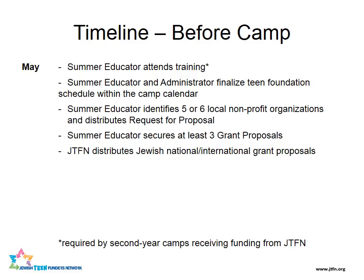After this training, the next big step will be to finalize the teen foundation schedule within the camp calendar. We'll talk more about the best ways to do that during this training. Also in May: reaching out to and identifying five or six local nonprofit organizations, distributing a request for proposal, securing at least three grant proposals back from the nonprofits you solicited, and JTFN will distribute national and international Jewish grant proposals.